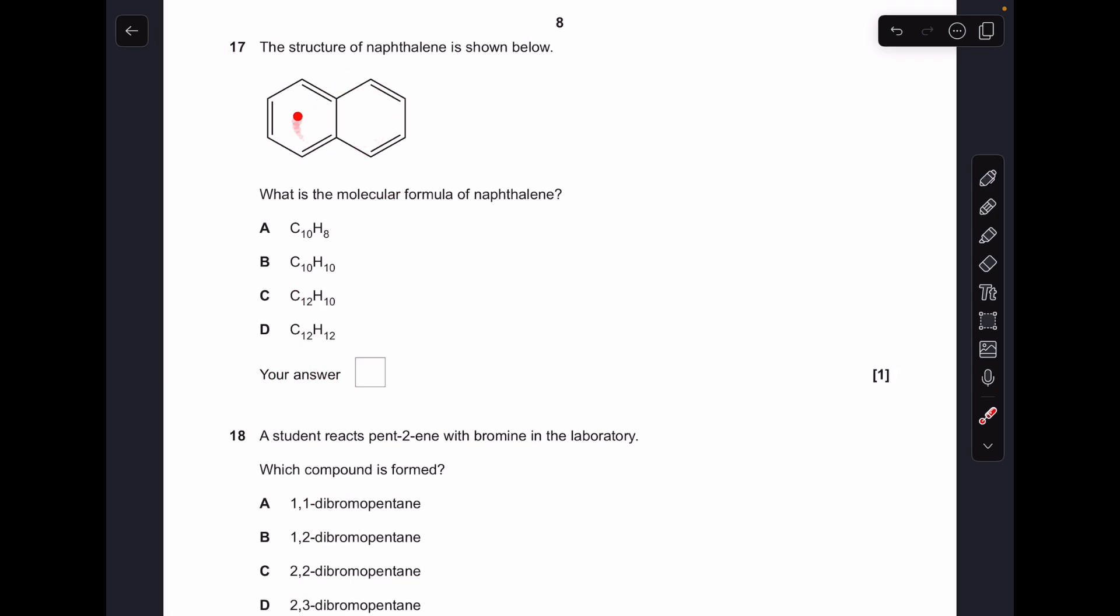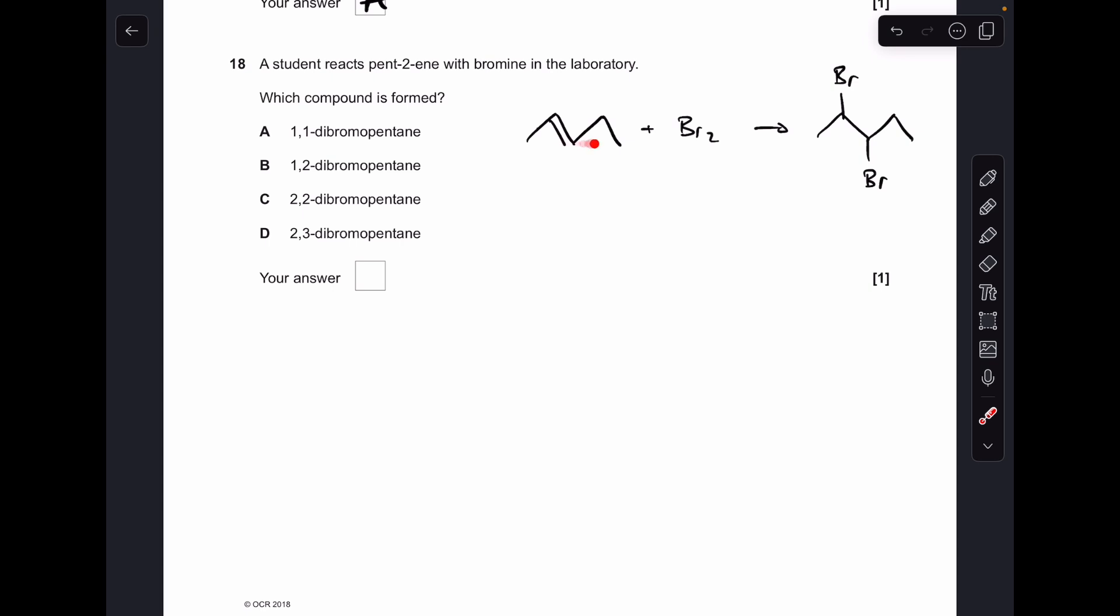Number 17. So the first thing to say is we've only got 10 carbons here, not 12, because these two carbons are shared. So I can rule out C and D. And then if we put dots for hydrogens, we've got eight hydrogens. So it was option A. Nice, easy one for 18. So pent-2-ene reacts with bromine, makes this 2,3-dibromopentane. So D was the answer.